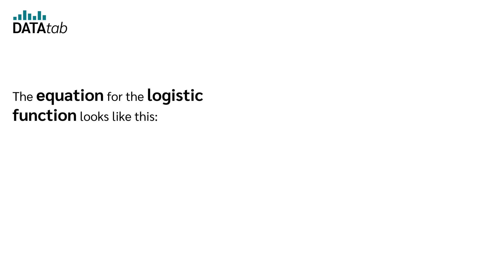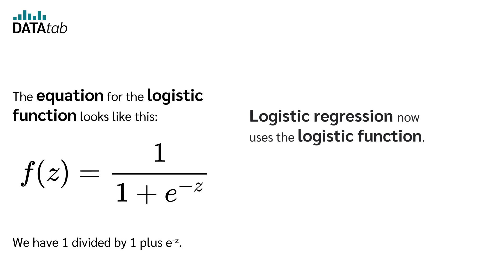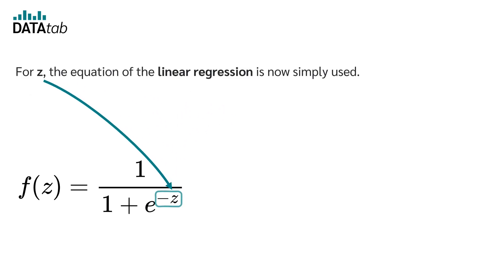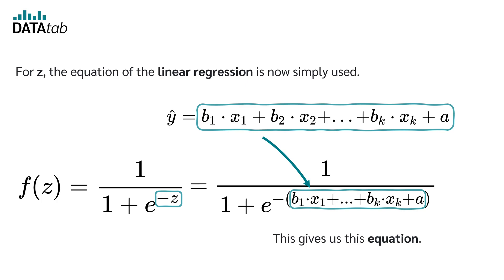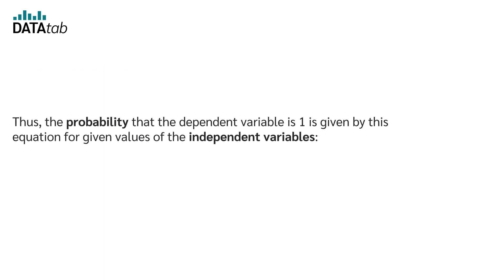The equation for the logistic function looks like this. We have 1 divided by 1 plus e to the power of minus z. Logistic regression now uses the logistic function. For z, the equation of the linear regression is now simply used. This gives us this equation. Thus, the probability that the dependent variable is 1 is given by this equation for given values of the independent variables.